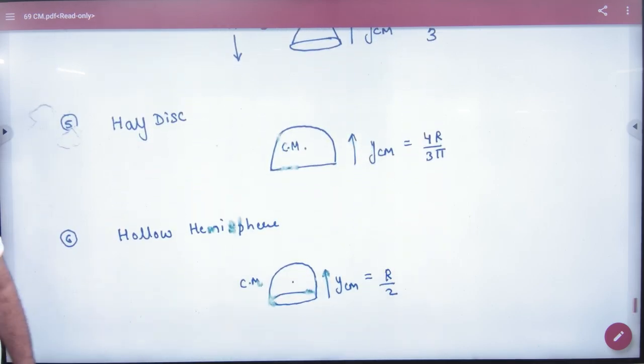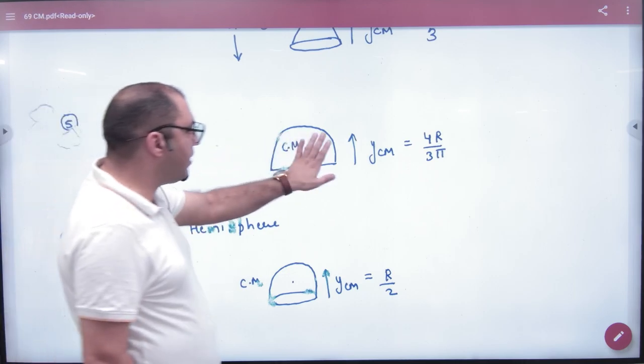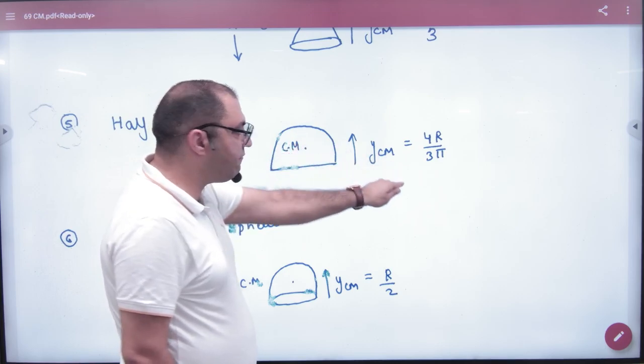The second one is half disc. Complete disc is placed in the center of mass. So if it is half disc of mass, area-wise, then how much height is it? 4r by 3π.